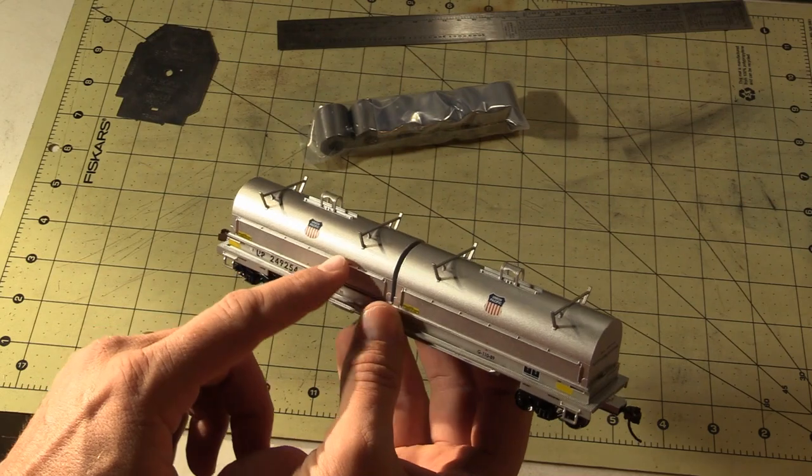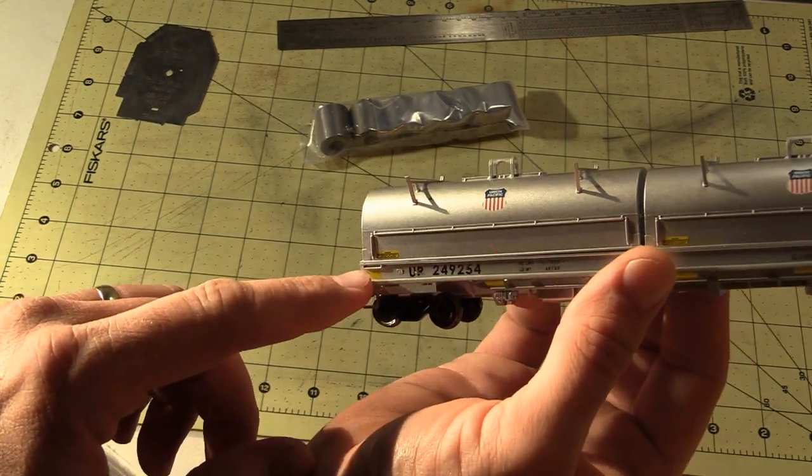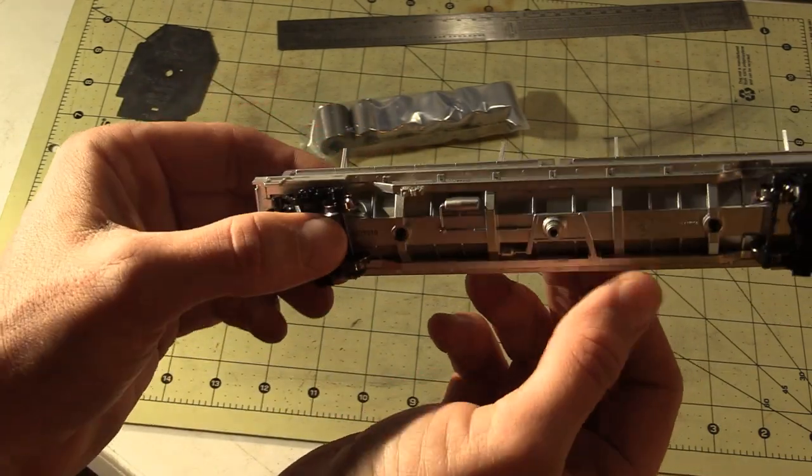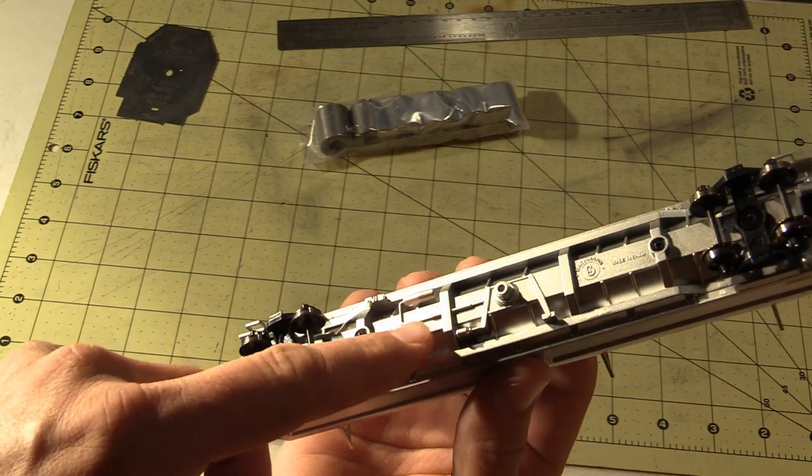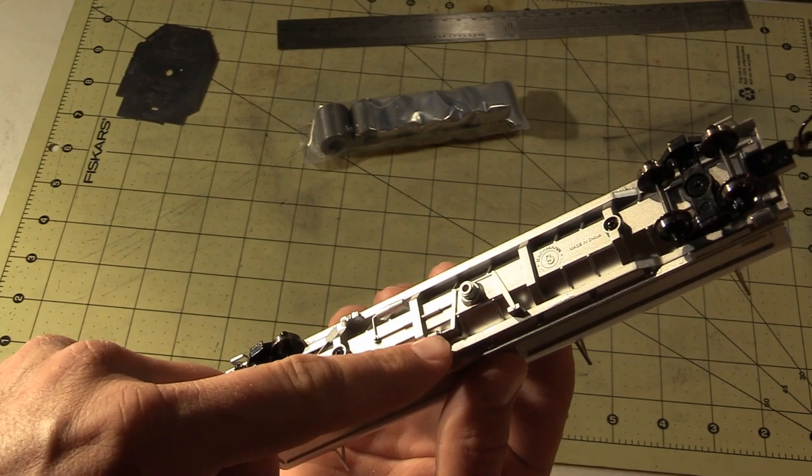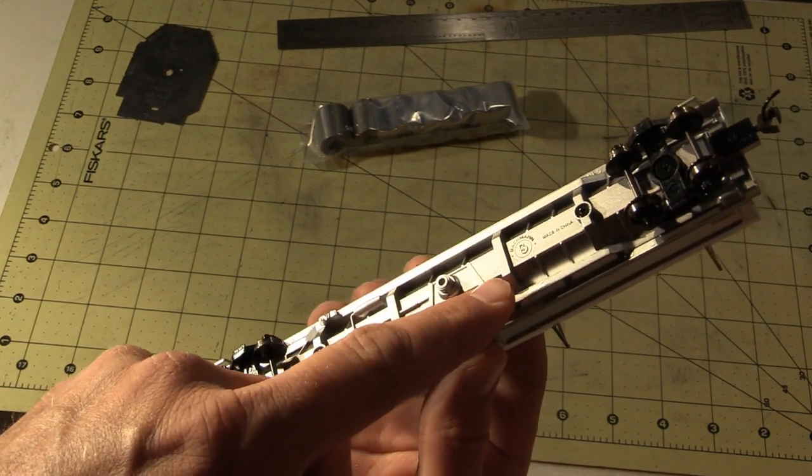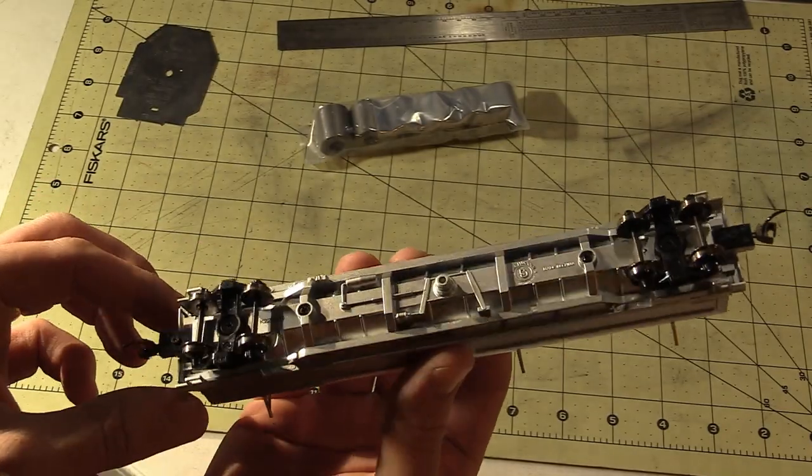we will see that a lot of the details are molded on. All of these handrails, all molded into the hood. The grab irons right here, they're all molded in. Let me flip it upside down. Even the air tank is molded into the frame. All of that piping and rigging, it's all just molded on. There's no separately applied detail parts anywhere on there. So that's a little disappointing.